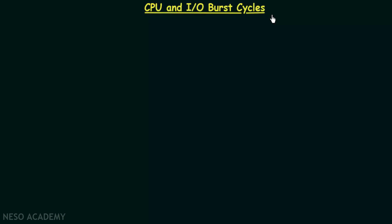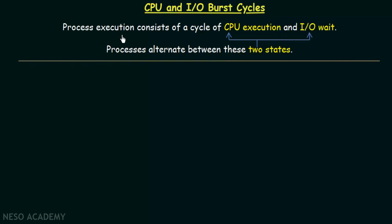With regard to that, there are two important terms we should know and understand: CPU burst and IO burst. We will understand what we mean by CPU burst and IO burst, and also understand what the CPU and IO burst cycle is. Process execution consists of a cycle of CPU execution and IO wait. A process can be in either of these two states: CPU execution state and input/output waiting state.